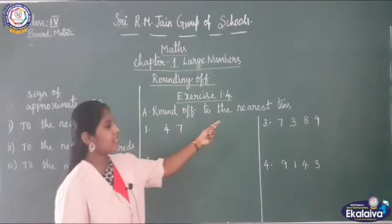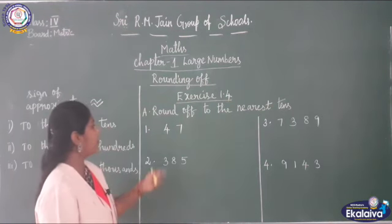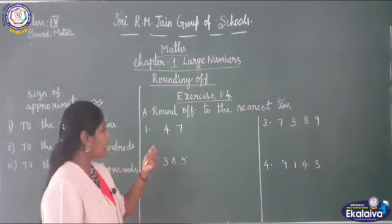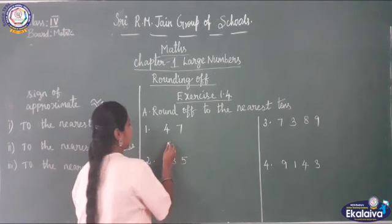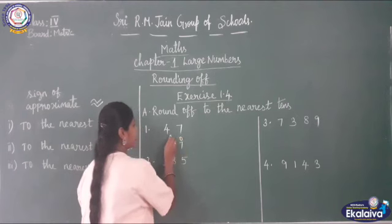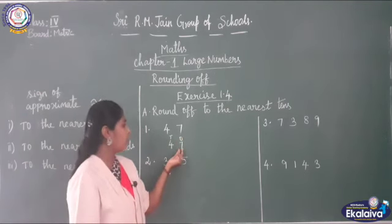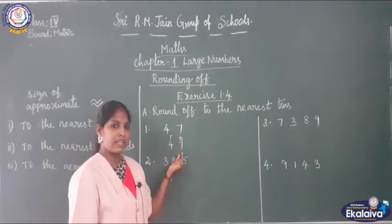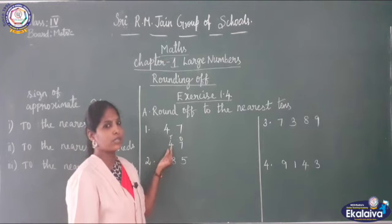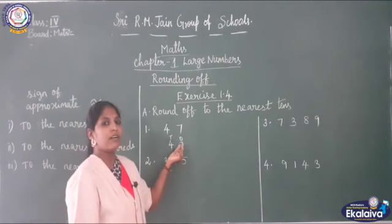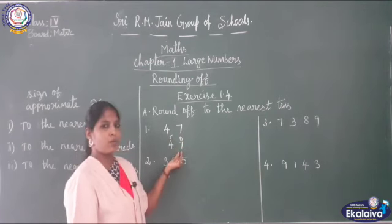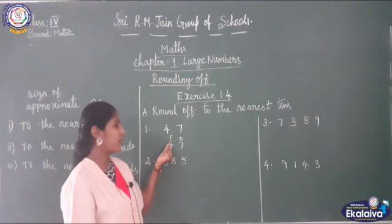Round off to the nearest tens. Here they have given 47 as a number. Now you have to write the approximate value of this. I will write the number 47 with its place value: ones and tens. You have to check the ones place. If it is less than 5, you will put 0 in ones place and write the actual number in the tens place. When ones place is 5 or greater than 5, you put 0 in ones place and add 1 to the tens place.